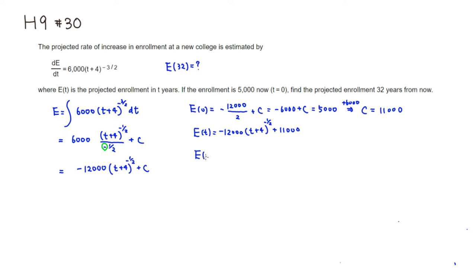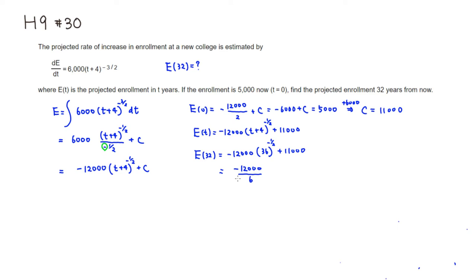Let's find E of 32 — the projected enrollment in 32 years. It's going to be negative 12,000, and if you plug in 32, that's 32 plus 4, so it's going to be 36 to the negative 1 half power, plus 11,000. We can do this by hand: take the square root of 36, that's 6, and the reciprocal, so it's 1 over 6, plus 11,000.